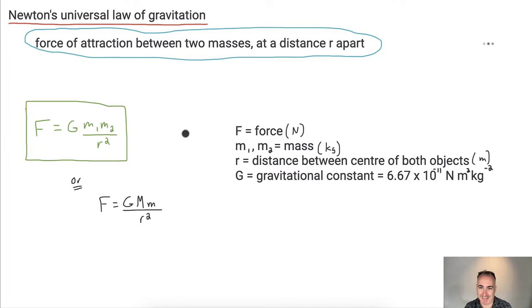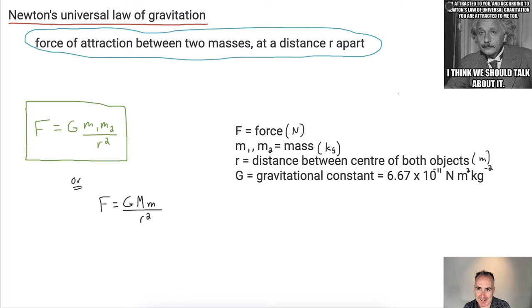I'm attracted to you, and according to Newton's universal law of gravitation, you're attracted to me too. Because anything with mass is attracted. That means if I left you and your friend out in outer space with a space suit so you wouldn't die, in the absence of other gravitational fields, the two of you would actually have a force of attraction, which means given enough time, you'd end up sticking together.